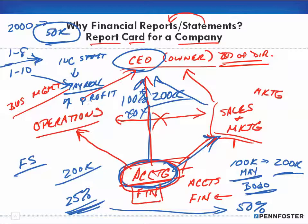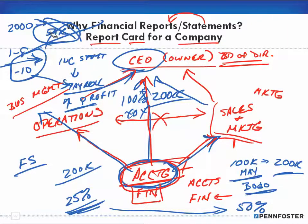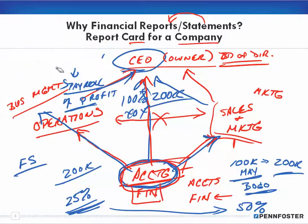So that business management person is sitting there saying, 'Oh yeah, we're doing wonderful — our profit is up,' and that's what he's telling the CEO. But the accountant is sitting there going, 'Yeah, that's nice — except we lost the contract due to poor quality.' There were too many problems: people weren't getting their food on time, food was cold, things were being dropped, it was just a fiasco. Next year we don't have that $50,000 contract, so next year our sales are $50,000 less. That's the function of accounting, and that's the function of our financial statements — they are the report card for the company.